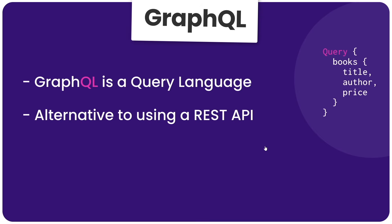GraphQL is kind of like an alternative to the more traditional approach of sending standard requests to a REST API using endpoints. But whereas using a REST API is more of an architectural style, GraphQL differs in that it's an actual query language with its own syntax and rules. It still uses HTTP requests under the hood, like we'd normally send to a REST API. It's just that we have this query language sitting on top of that to give us more flexibility and control about what data we want to fetch or mutate.